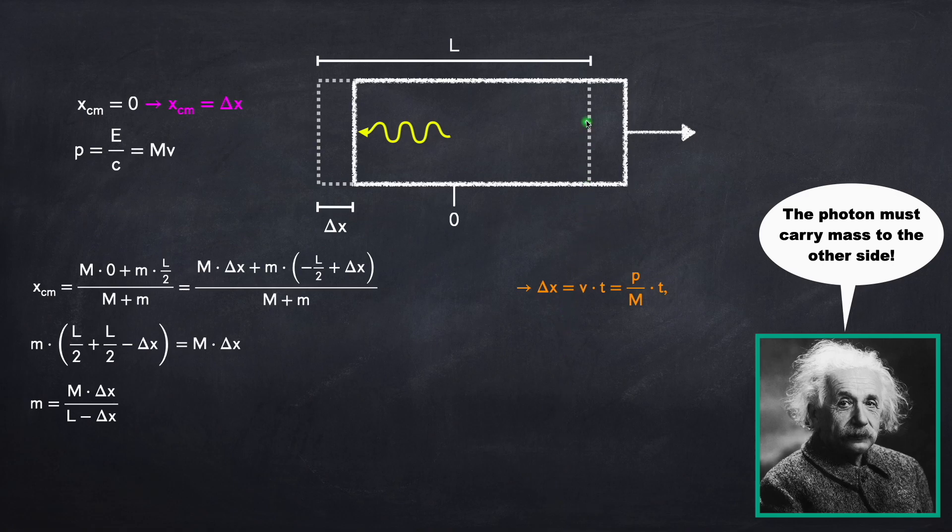Well, the photon starts off at a position L over 2 and winds up at a position negative L over 2 plus delta x. So it will have traveled a total distance of the length of the box minus delta x.